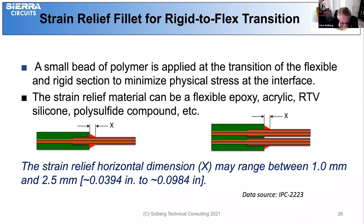The strain relief material can be flexible epoxy, acrylic, RTV silicone, polysulfide compound, etc. The strain relief horizontal dimension X may range from 1 mm to 2.5 mm.